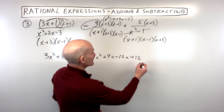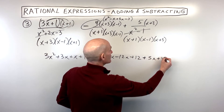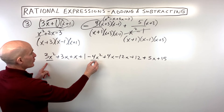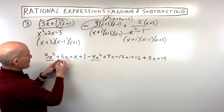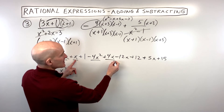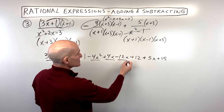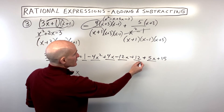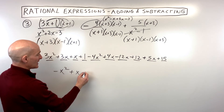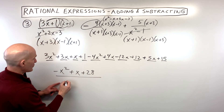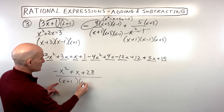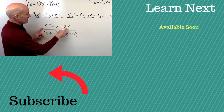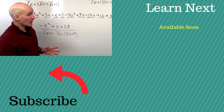Over here we're adding 5x plus 15, all over that common denominator. Combining the numerator: 3x squared and negative 4x squared gives negative 1x squared; 3x plus 1x is 4x, plus another 4x is 8x, minus 12x is negative 4x, plus 5x is 1x; and 1 plus 12 is 13, plus 15 is 28. All over our common denominator of x plus 1, x minus 1, x plus 3. We ask ourselves: can we factor this numerator further? Is there anything that multiplies to negative 28 and adds to positive 1? No — so that's as far as we can go on this one.